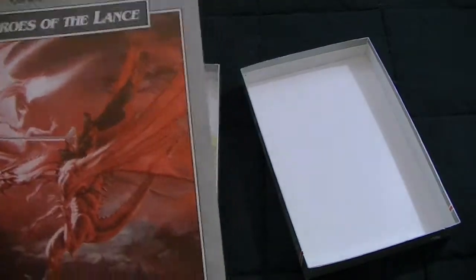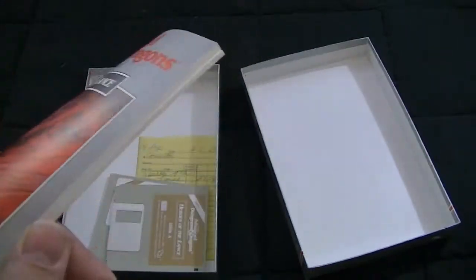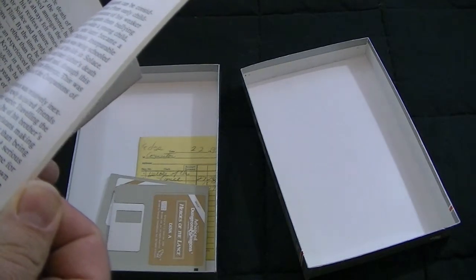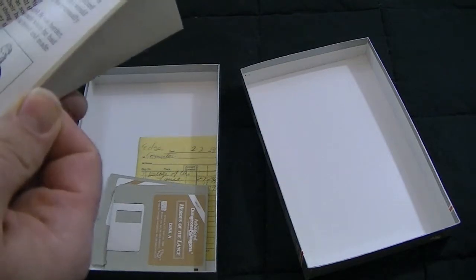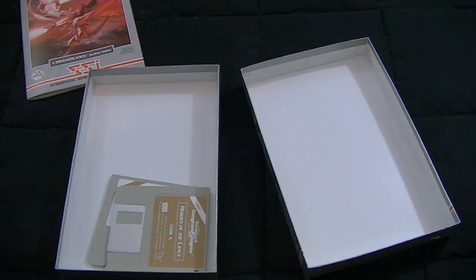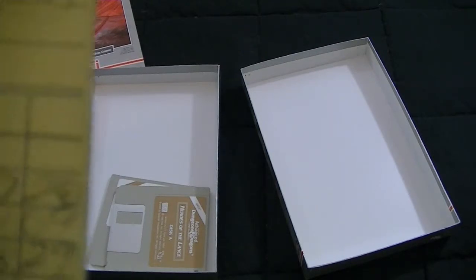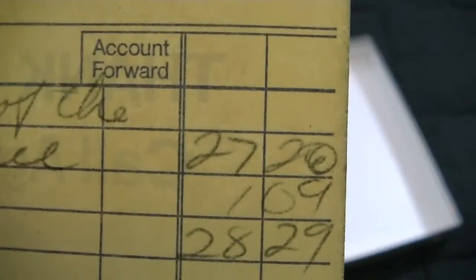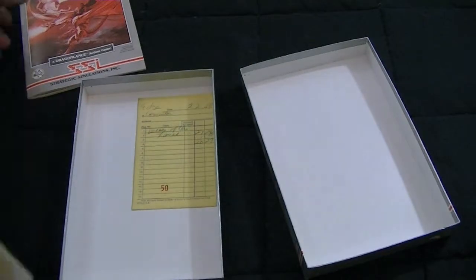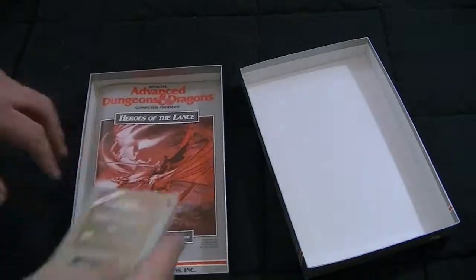But here we have the computer product. How to play it. Oh it actually explains the characters and everything. That's pretty cool. Oh, we've got a receipt. Heroes of the Lance, $27.20 in 1991. Good to know. And now we have Heroes of the Lance, Disc A and Disc B. I love it when I find the receipt in there.